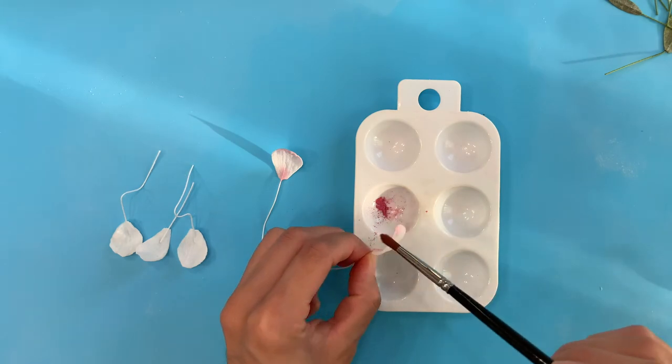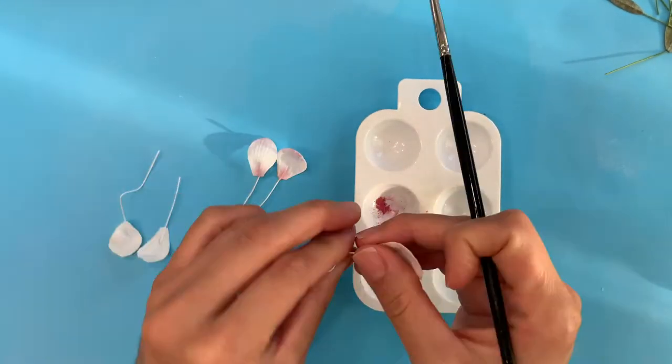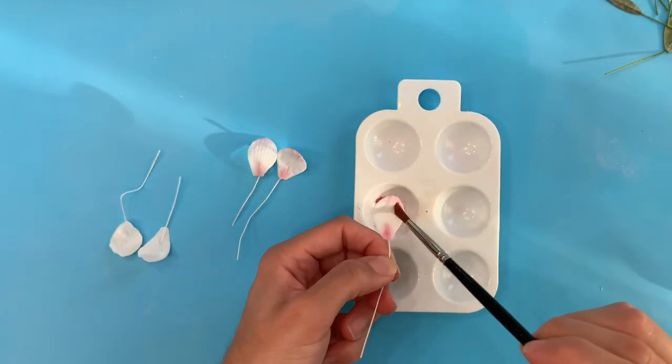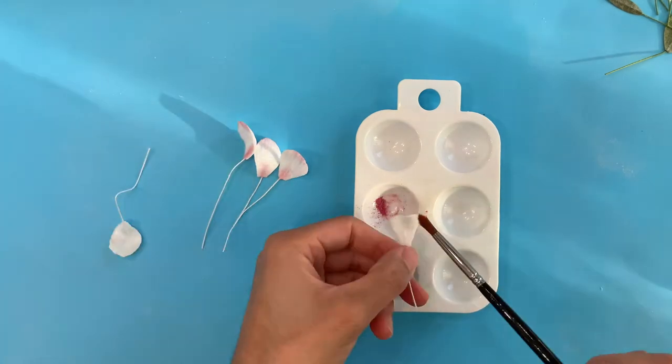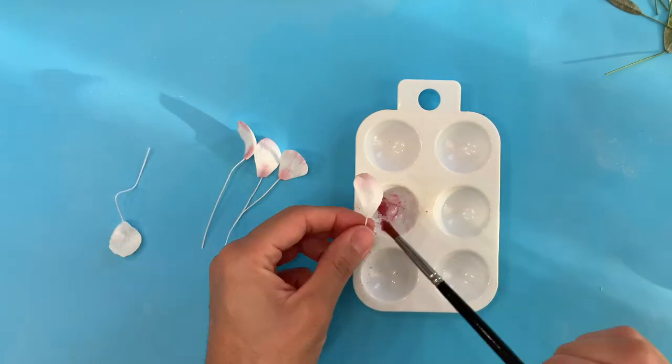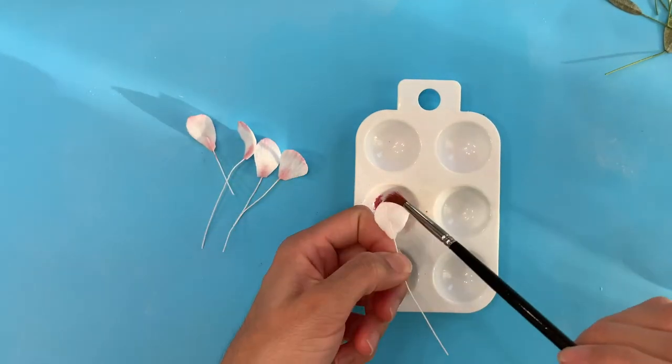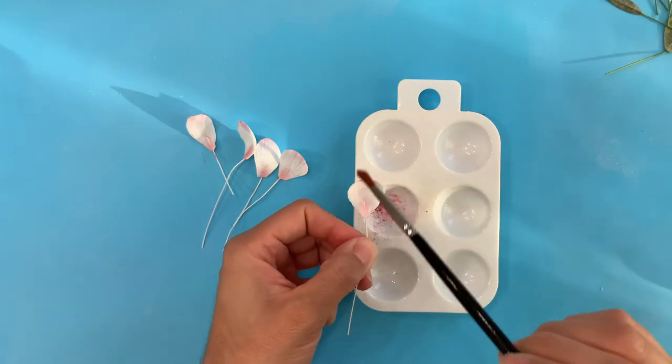For the petals on the flower, I'm just giving it a little bit of a light fuchsia on the bottom and on the tips just to give it a little bit of color and make it a little more interesting and have it pop a little more and not just be a plain white.